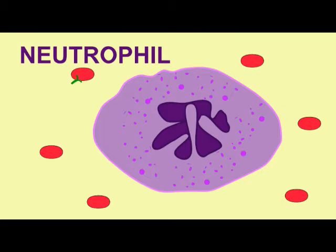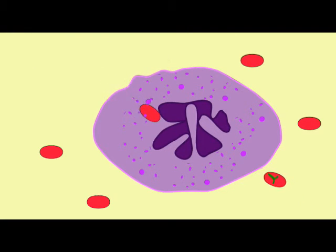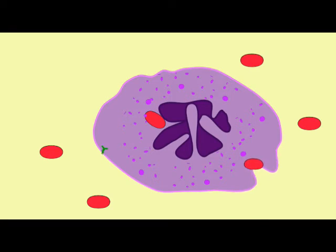The immune system produces substances which bind to antigens, such as antibodies and lectins, and neutrophils can recognize these.